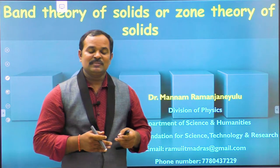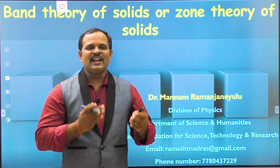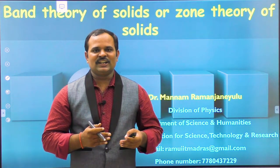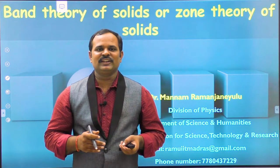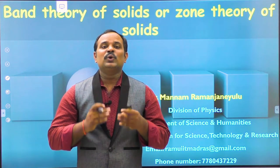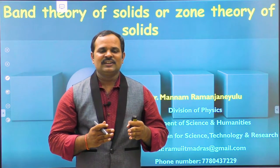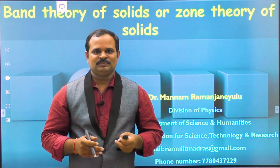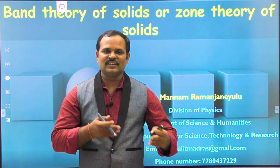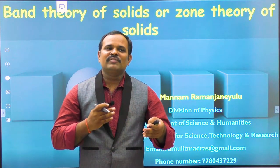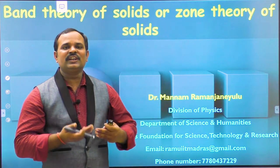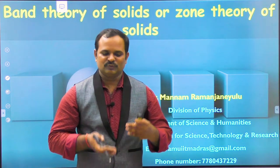Based on these assumptions, Sommerfeld calculated and successfully explained many properties of materials, including electrical conductivity, thermal conductivity, temperature-dependent electrical resistivity, magnetic properties, and so on. However, quantum free electron theory could not explain why some materials are conductors, semiconductors, and insulators. Quantum free electron theory is unable to distinguish between these materials. That means quantum free electron theory also failed — where it failed and how the band theory or zone theory corrected this, we will see in this class.